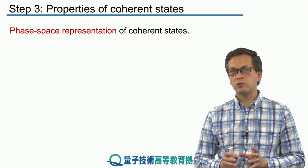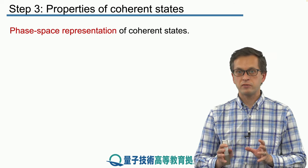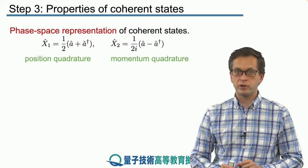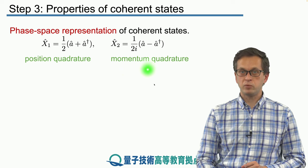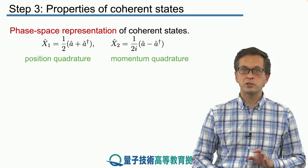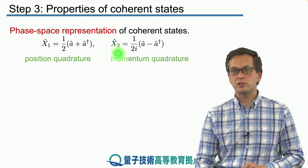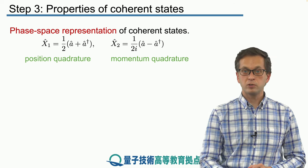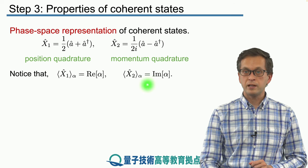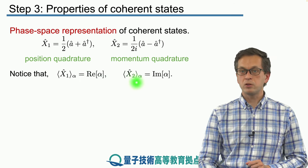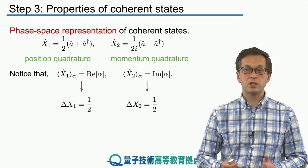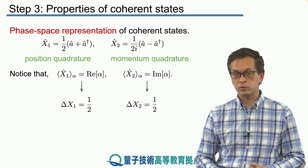Now we will describe how to represent coherent states in a very suggestive and useful way — the phase space representation of coherent states. We define two new operators: the position quadrature and the momentum quadrature, denoted x1-hat and x2-hat respectively. These are rescaled, dimensionless versions of our position and momentum operators. The average of x1 with respect to a coherent state alpha equals the real part of alpha, and the average of x2 equals the imaginary part of alpha. The fluctuations in x1 and x2 are each one half.